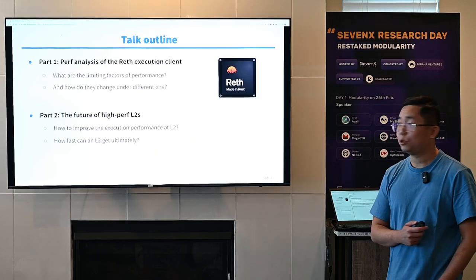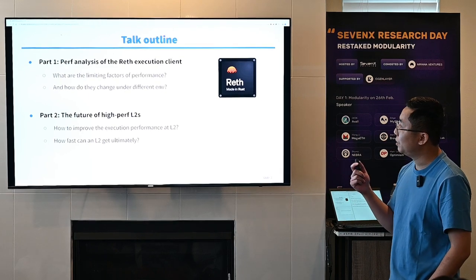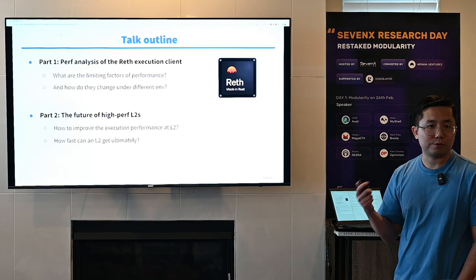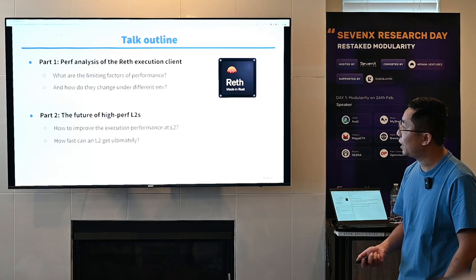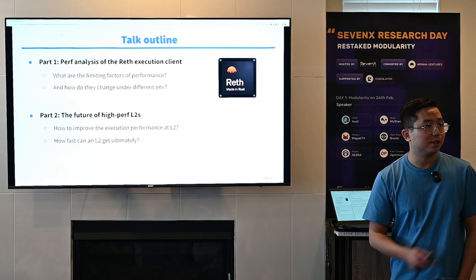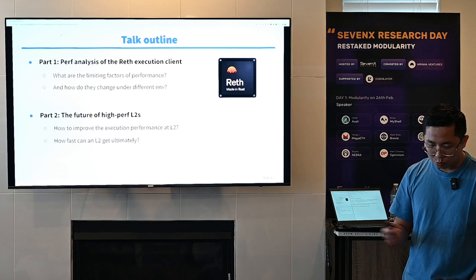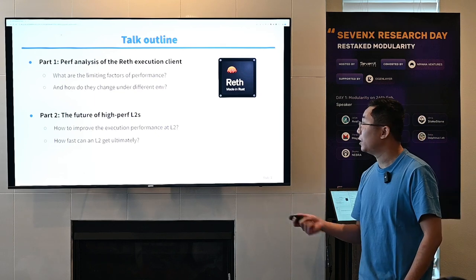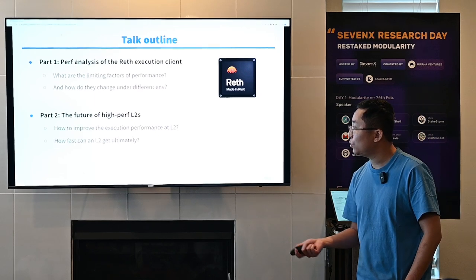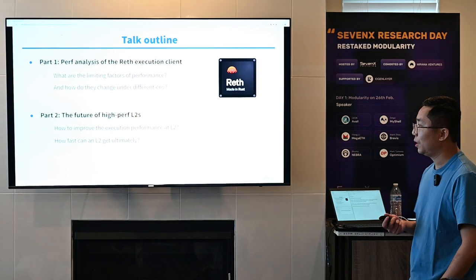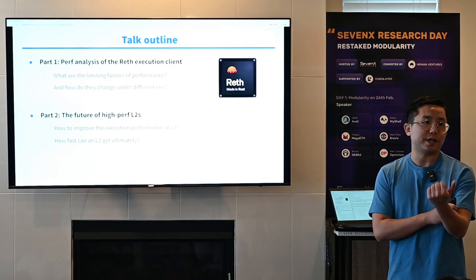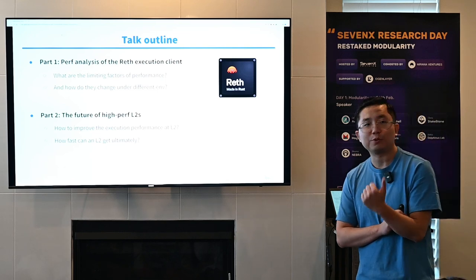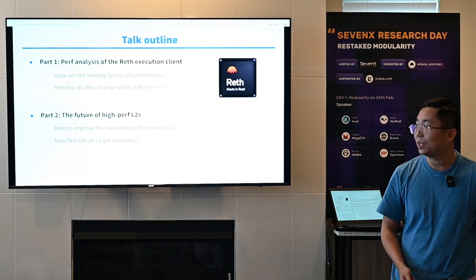This talk will be structured in two parts. In part one, I'm going to share some interesting lessons we learned from profiling the Reth execution client — answering questions like what are the current bottlenecks of execution clients and how did they change under different conditions. In part two, I'm going to share some thoughts on how we can actually improve execution performance at layer two and how much performance we can squeeze out of it eventually.